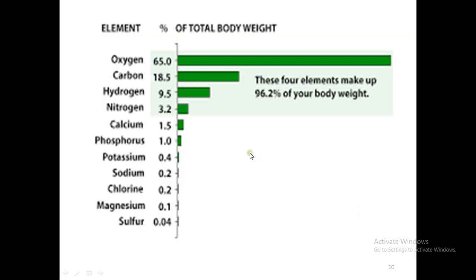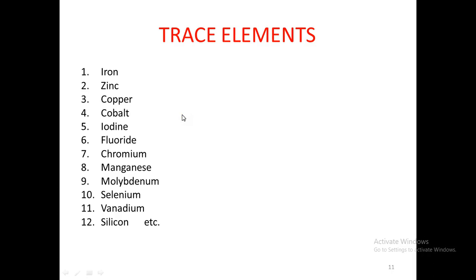The main elements in the human body are oxygen, then carbon, then hydrogen, then nitrogen — these four elements make up nearly 96% of our body weight. Then we have smaller amounts of calcium, phosphorus, potassium, sodium, chlorine, magnesium, sulfur, etc. We also have trace elements present in very minute amounts, with very small dietary requirements. These include iron, zinc, copper, cobalt, iodine, fluoride, chromium, manganese, molybdenum, selenium, vanadium, silicon, etc.